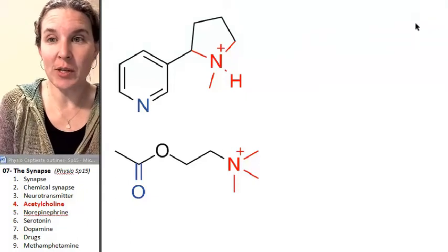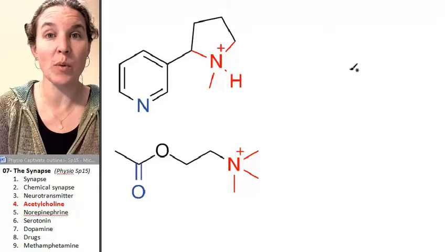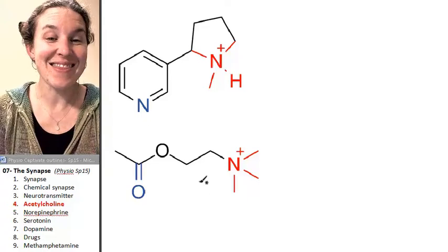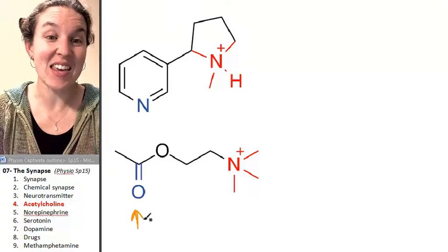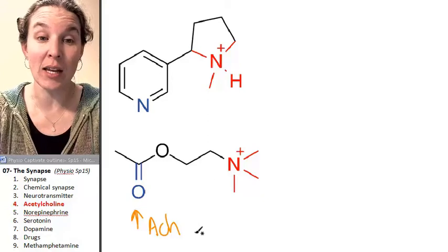Acetylcholine is a very common neurotransmitter, and I'm going to tell you a couple places where we can see it. First of all, I'm going to tell you that this right here is acetylcholine, and we often abbreviate acetylcholine ACH.